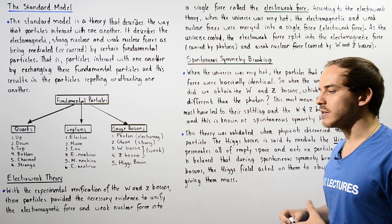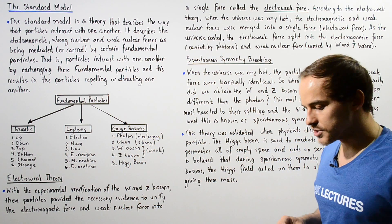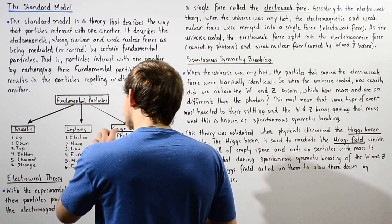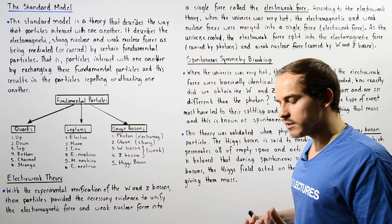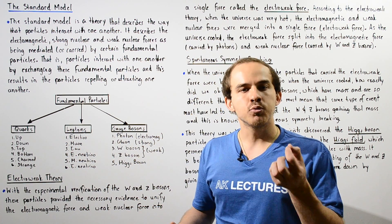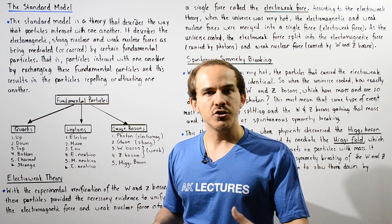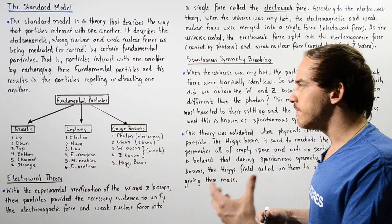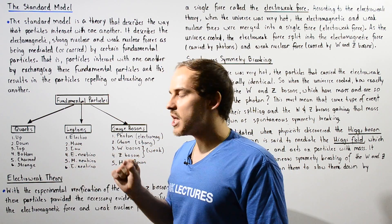This is what the standard model basically tells us about how particles interact with one another. There are many different types of fundamental particles. A fundamental particle is any particle believed to have no internal structure. There are three major subcategories: quarks, leptons, and gauge bosons. Quarks are fundamental particles that compose other particles known as hadrons. For example, the proton consists of two up quarks and one down quark, and the neutron consists of one up quark and two down quarks.